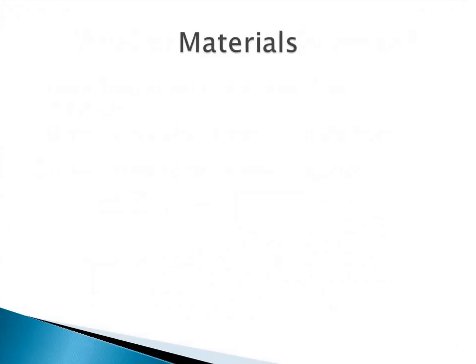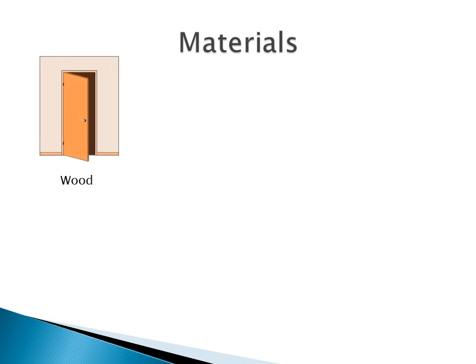Look at this door — this door is made from wood, and we can get wood from a tree. This is a key — I can open the door with it, and it is made from metal.